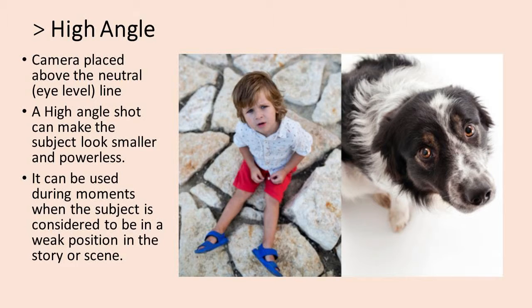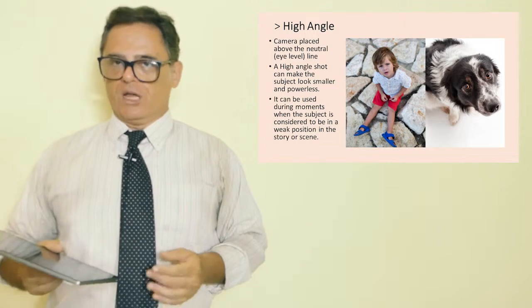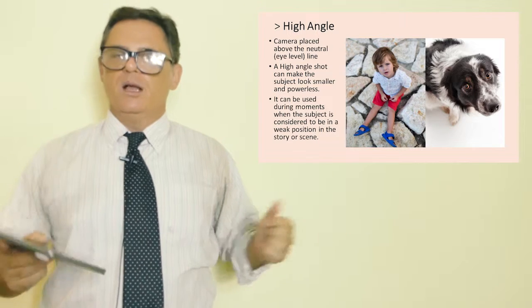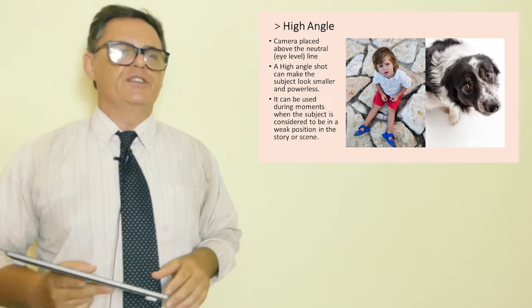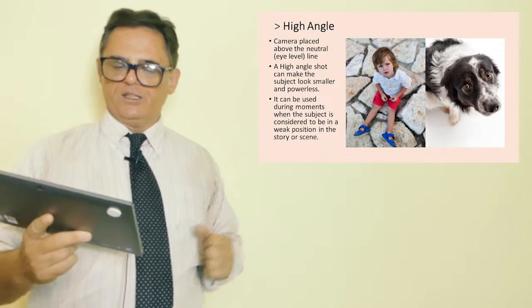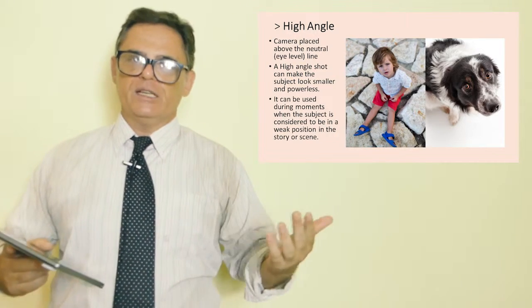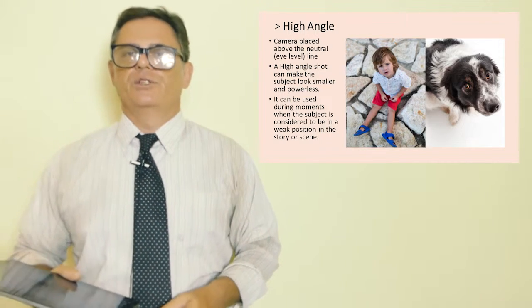High angle. The high angle shot has the camera placed above the eye level. So high angle, the camera is above eye level, looking down to some degree on the subjects. And the high angle shot, it can make the subject look smaller, powerless, doubtful, weaker. In this case, you see a young child and the begging dog. So the dog is a supplicant and presumably in a weaker position as is the child. We don't have to use a high angle to show the kid or the animal, but it is an aesthetic choice, especially if the scene requires that character to appear to be weaker or smaller. Again, it's often used in moments where the subject may be considered to be in a weaker position or either weaker physically or psychologically or smaller physically or psychologically.